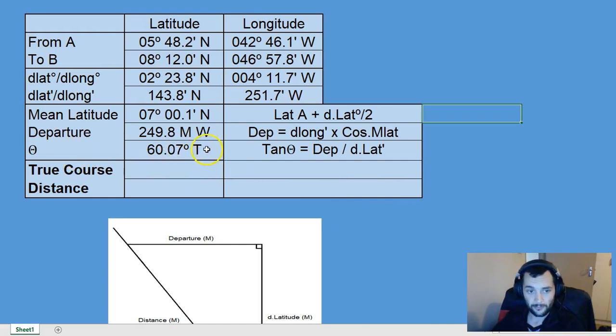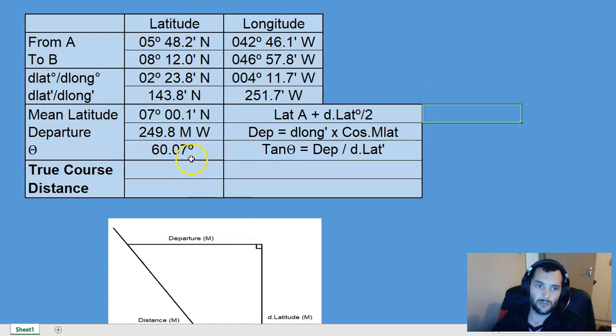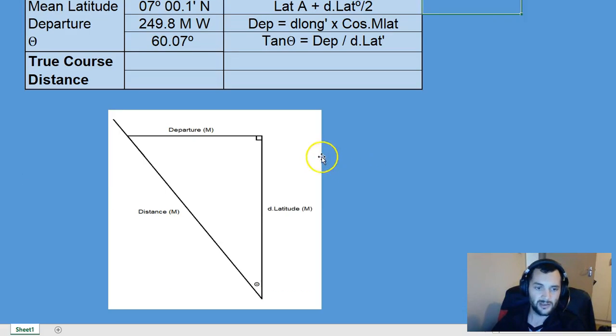This is not a true course. That's just an angle. It's the angle from north going westwards towards our true course. Because our direction is north and west, it's from north measuring westwards by about 60.07 degrees in order to find our true course.